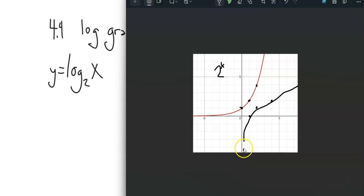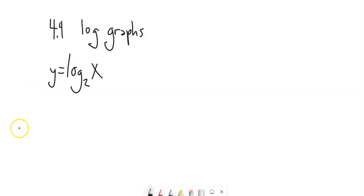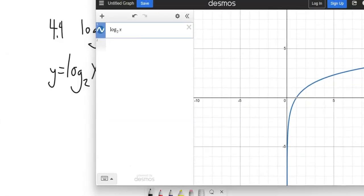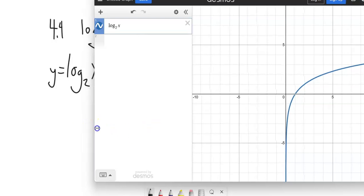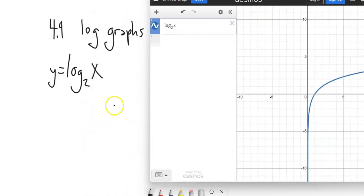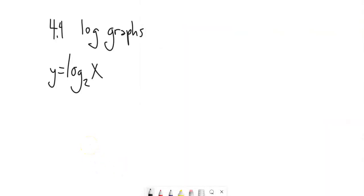And so I've got my asymptote like here. So there's a decent sketch of that graph. Looks something like this.